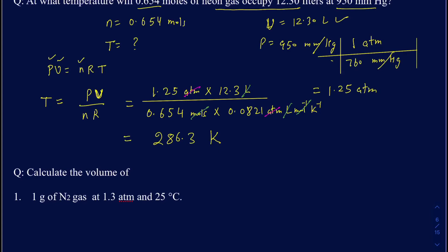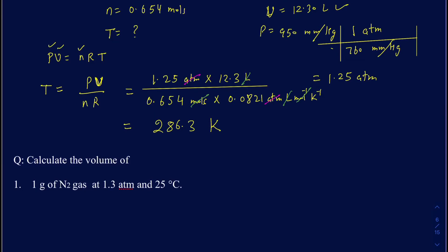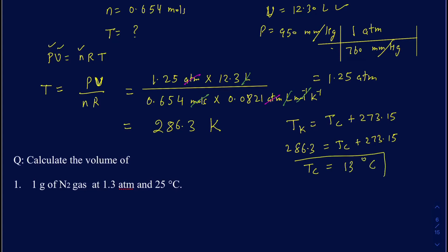If they ask for the final temperature in Celsius, make sure you always do calculations in Kelvin first, then convert. Using Kelvin = Celsius + 273.15, we get 286.3 = Celsius + 273.15, so the temperature is roughly 13 degrees Celsius.